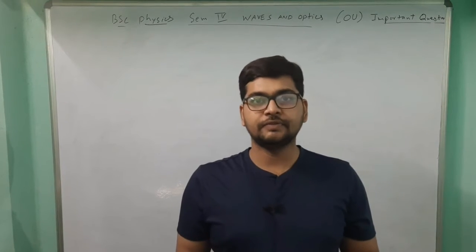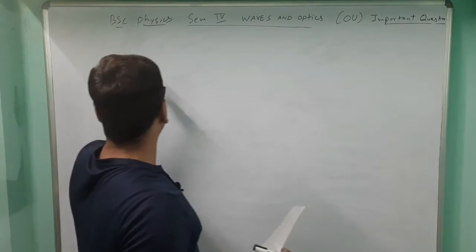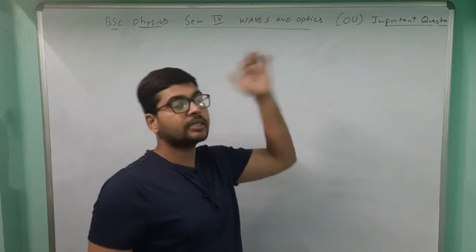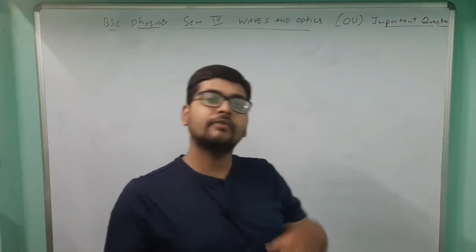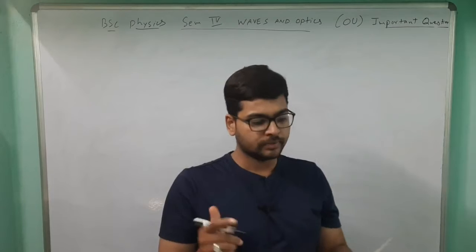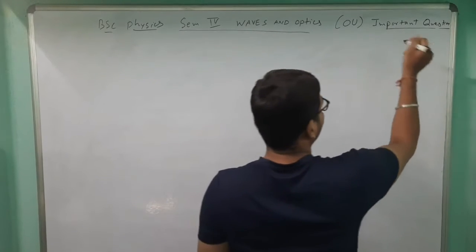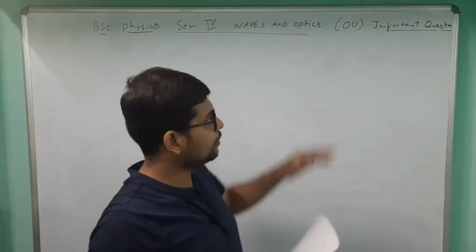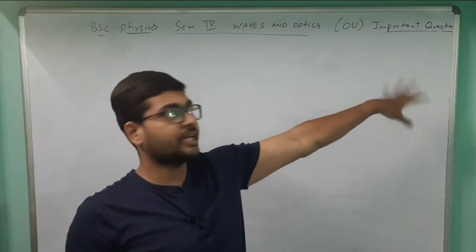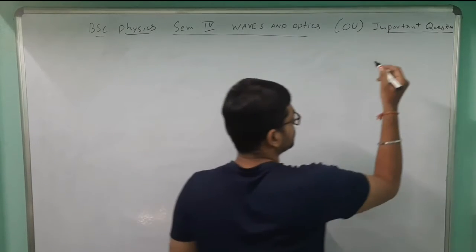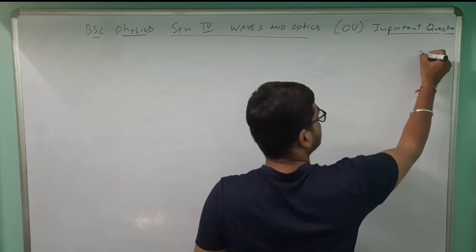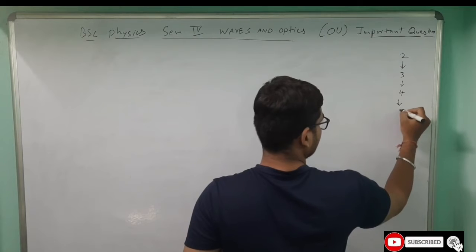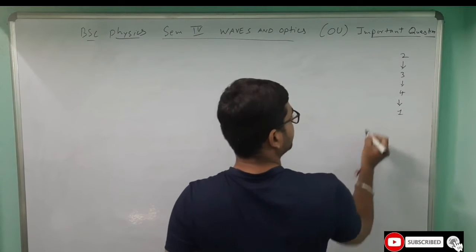Hello friends, in this video we are going to discuss BSc Physics Semester 4 — Waves and Optics — for Osmania University. You need to know the important questions according to your final examination course. I'll go by a procedure: every time, unit by unit. As a student, first go for unit two, then after that unit three, unit four, and lastly unit one.